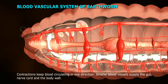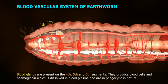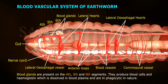Smaller blood vessels supply the gut, nerve cord, and the body wall. Blood glands are present on the fourth, fifth, and sixth segments. They produce blood cells and hemoglobin, which is dissolved in blood plasma, and are phagocytic in nature.